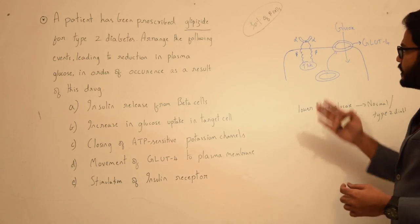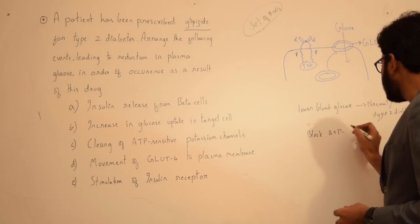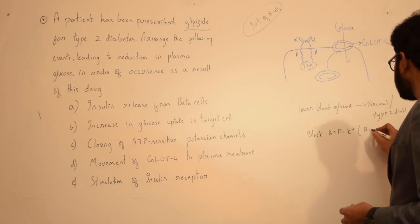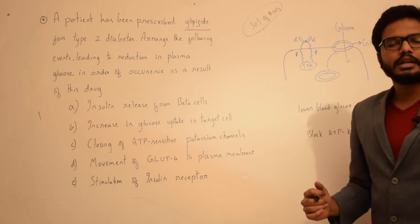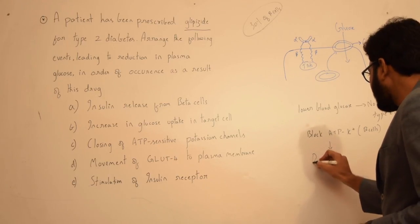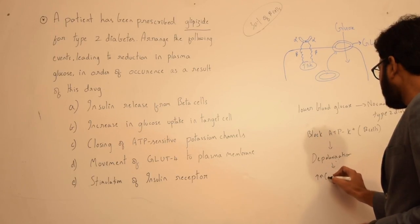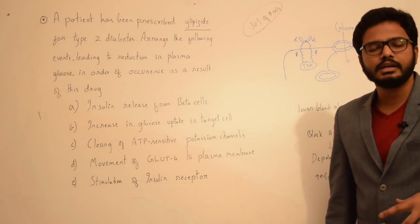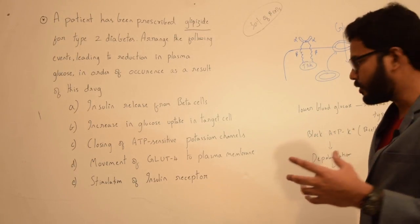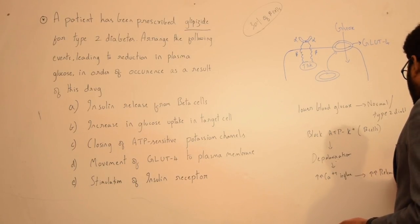The mechanism of action of sulfonylureas is that they initially block ATP-sensitive potassium channels present within the beta cells of the islets of pancreas. Because of this blockage or closure of these ATP-sensitive potassium channels, there will be depolarization. As a result of this depolarization, there will be triggering of calcium influx within the cells, and due to this calcium influx there will be degranulation with subsequent release of insulin.